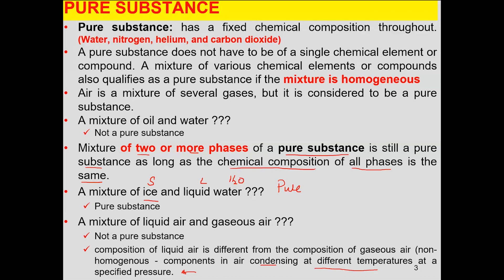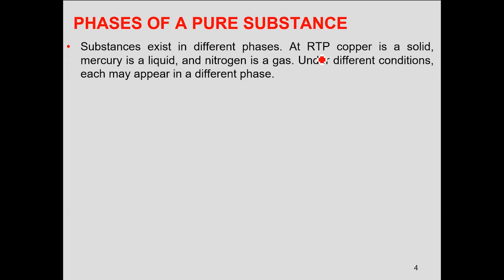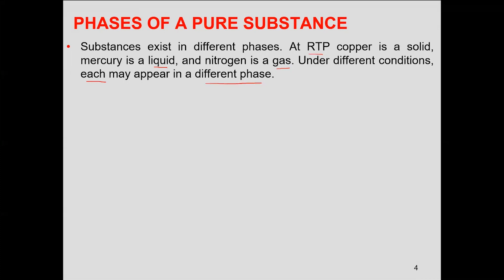Moving on to the phases of a pure substance: a substance exists in different phases. At room temperature and pressure, copper is solid, mercury is liquid, and nitrogen is in the gaseous phase. However, copper at about 1300–1400 degrees centigrade would be in liquid form, and nitrogen at minus 196 degrees centigrade would be in liquid form. It depends on the temperature and pressure you are referring to. There are three principal phases.